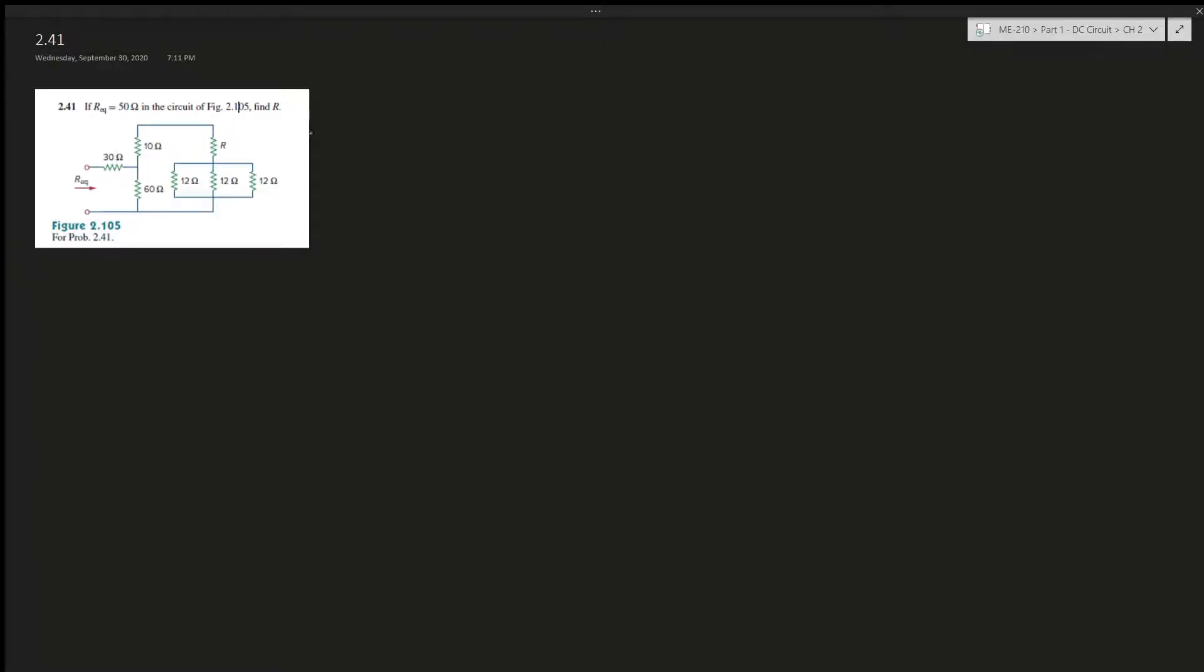Alright, question 2.41 as one of my viewers have requested. It says if the equivalent resistance is 50 ohms in the circuit of the figure, find R. Okay, so this one is a little different but we can just use the same way we always find the equivalent resistance.